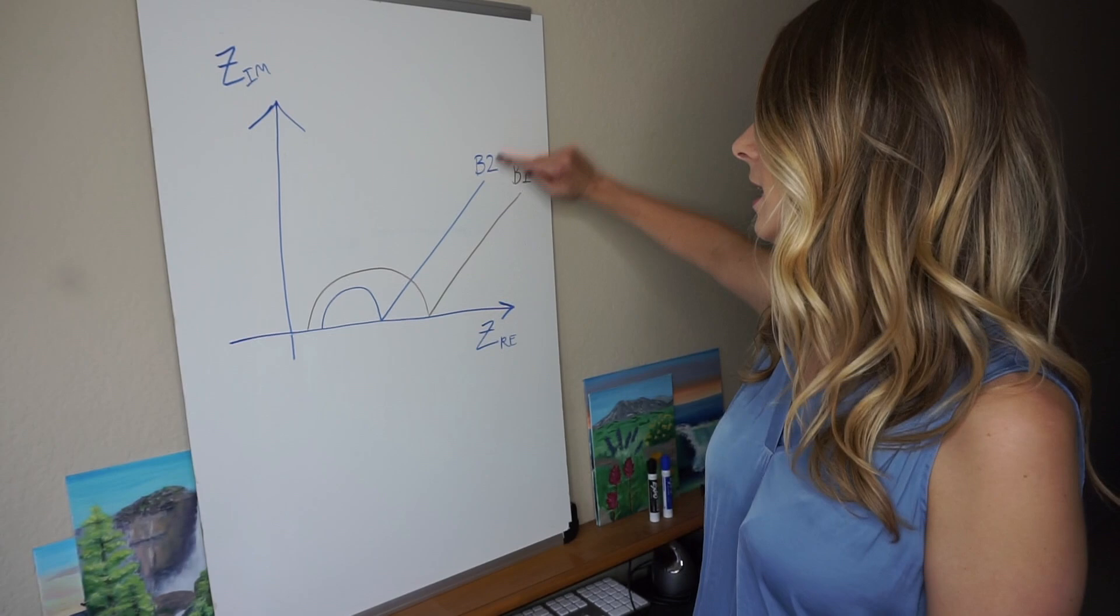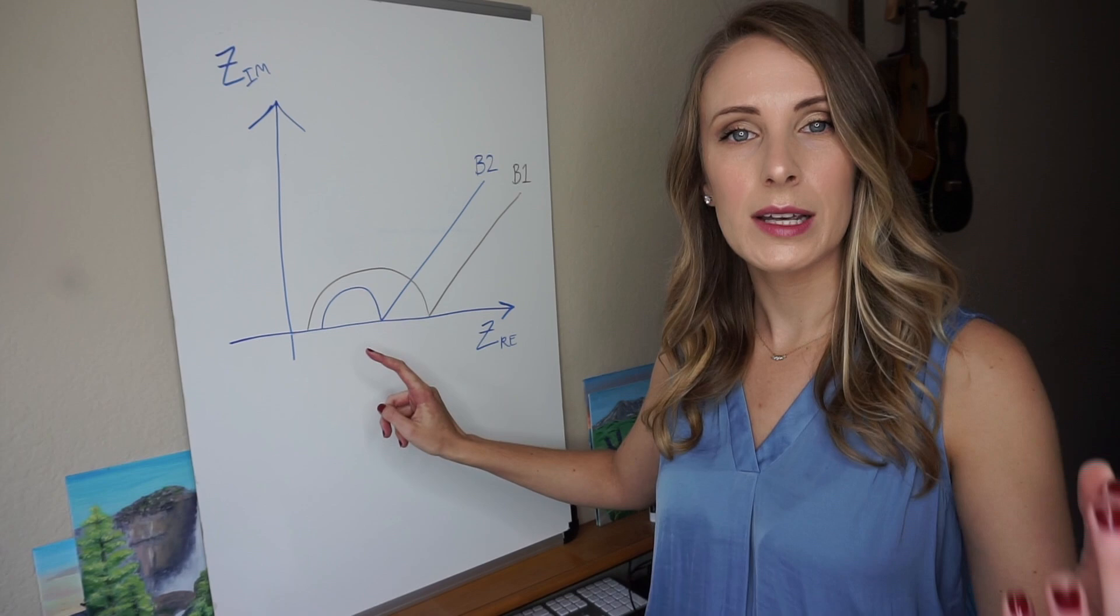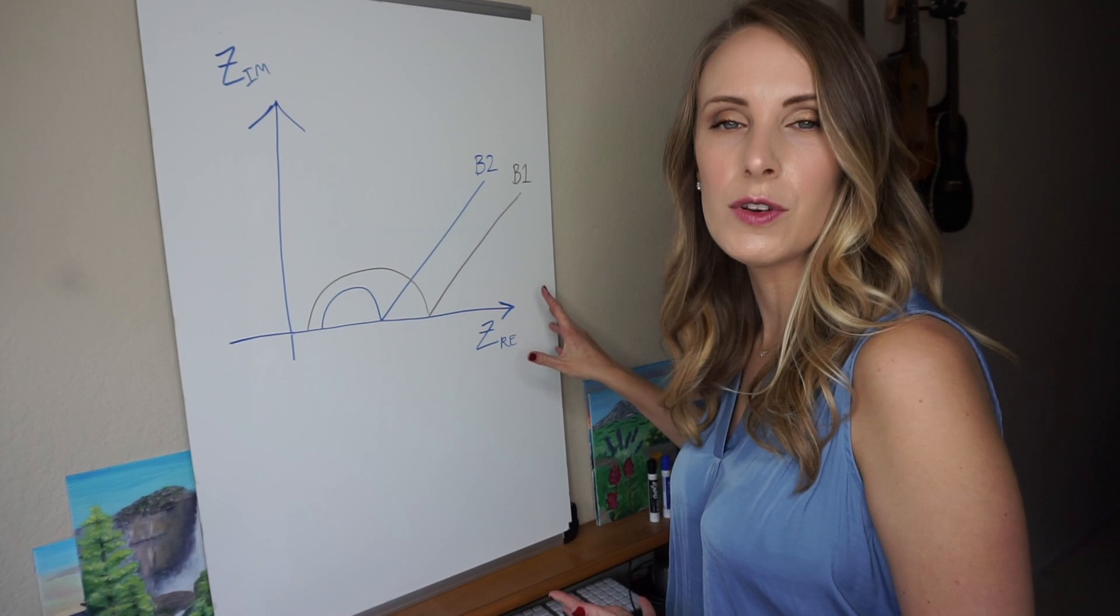The second component is the semicircle itself. And the third component is this line that just goes off into infinity. The highest frequencies are over here and the lowest frequencies are over here. So over here we're seeing the quickest processes and farther along we're seeing the slower processes. So around here we're seeing reactions and over here we're seeing diffusion.